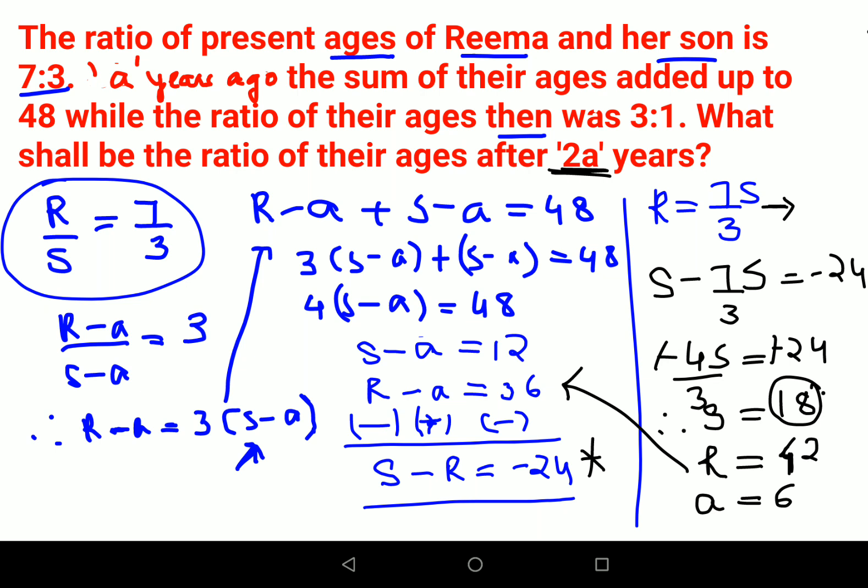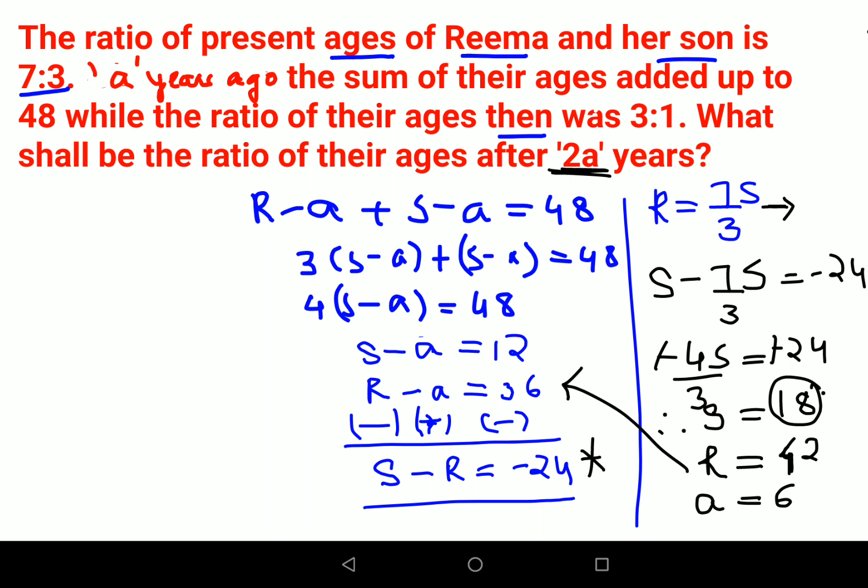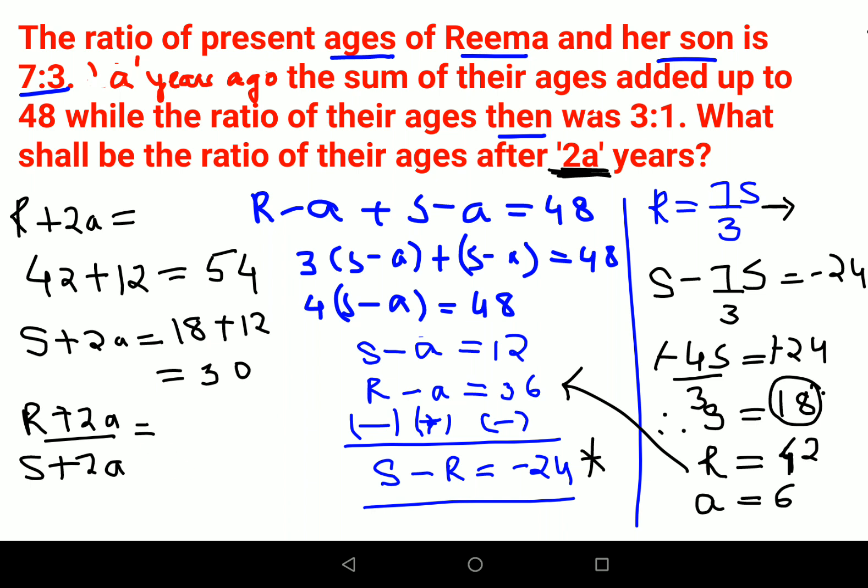So now basically what you have to do in this case is we will find the value of R 2A years ahead. So R plus 2A that gets you what? R is 42, so 42 plus 2 times A that is 12, that gets you 54. And S plus 2A, that means 18 plus 12. So answer is coming out to be 30 and we need to find their ratio. So R plus 2A years upon S plus 2A years. This is your required ratio. So we have 54 upon 30 and you can reduce it because both of them go in 6 tables. So this is 9 and 5. So your answer is coming out to be 9 upon 5.